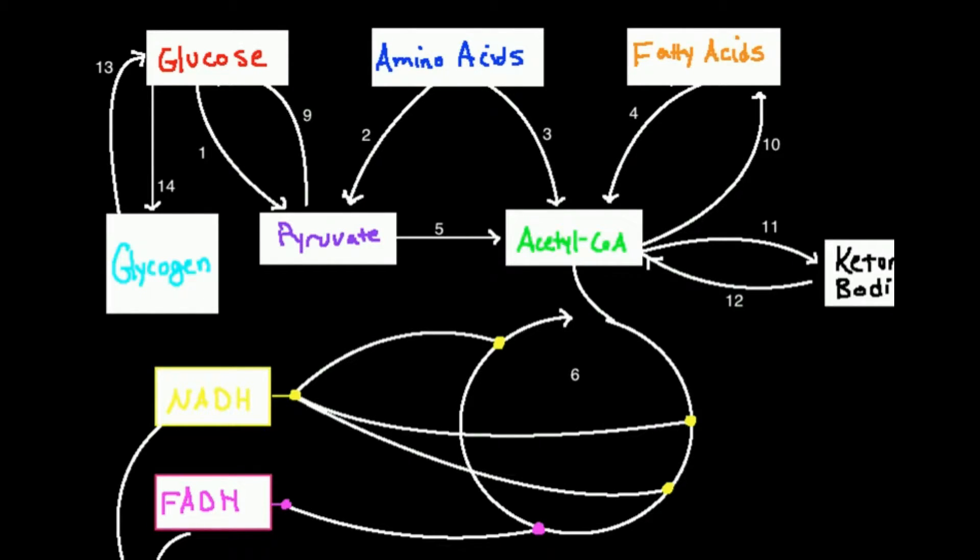If I wanted to, in times of the fed state, and I'm not exercising, I can do the reverse process. I can take glucose and turn it back to glycogen, number 14. That process is called glycogenesis. Distinguish it from gluconeogenesis, that is glycogenesis. Just wanted to make that perfectly clear.